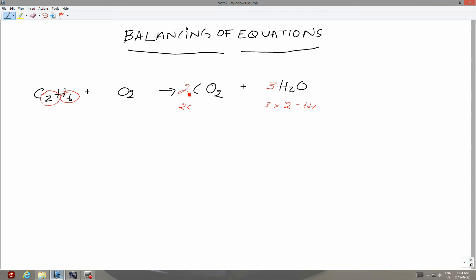So if I look at this coefficient two and multiply it by this two, which is a subscript for oxygen, I will get four oxygen atoms present in carbon dioxide.